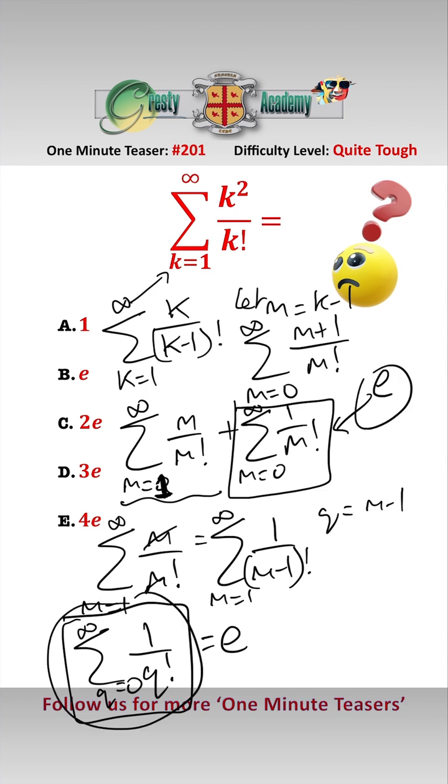and so therefore we have e plus e, which is 2e, answer c.